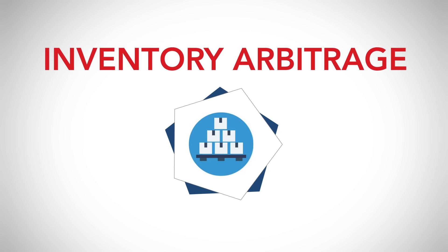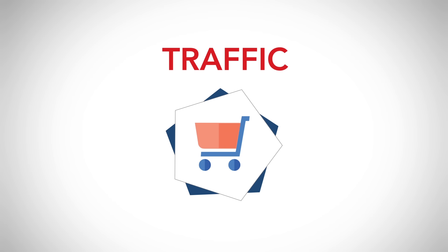Step number two, inventory arbitrage. How to sell millions of products without ever seeing or touching the product. You can automate the entire business right from China. Step number three, traffic. How to get waves of buyers to your site with just $5.